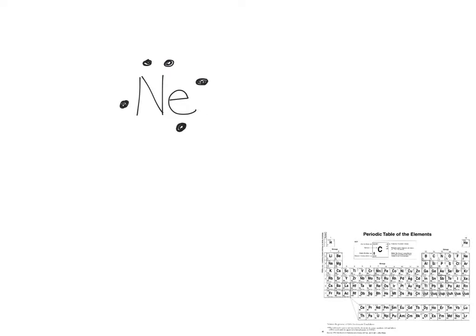So now we've placed 5, 6, 7, and number 8. That would be the dot structure for neon.